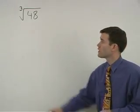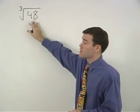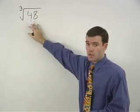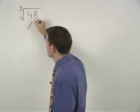To simplify a cube root where the number inside the radical is not a perfect cube, again we start by making a factor tree for the number inside.